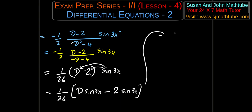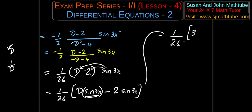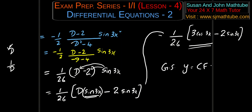Opening the brackets: 1 over 26 times [D of sine 3x minus 2 times sine 3x]. Here D means derivative, so D of sine 3x is 3 cos 3x. Therefore the particular integral is (3 cos 3x minus 2 sin 3x) divided by 26. The general solution is y equals CF plus PI — just add them together to get the solution.